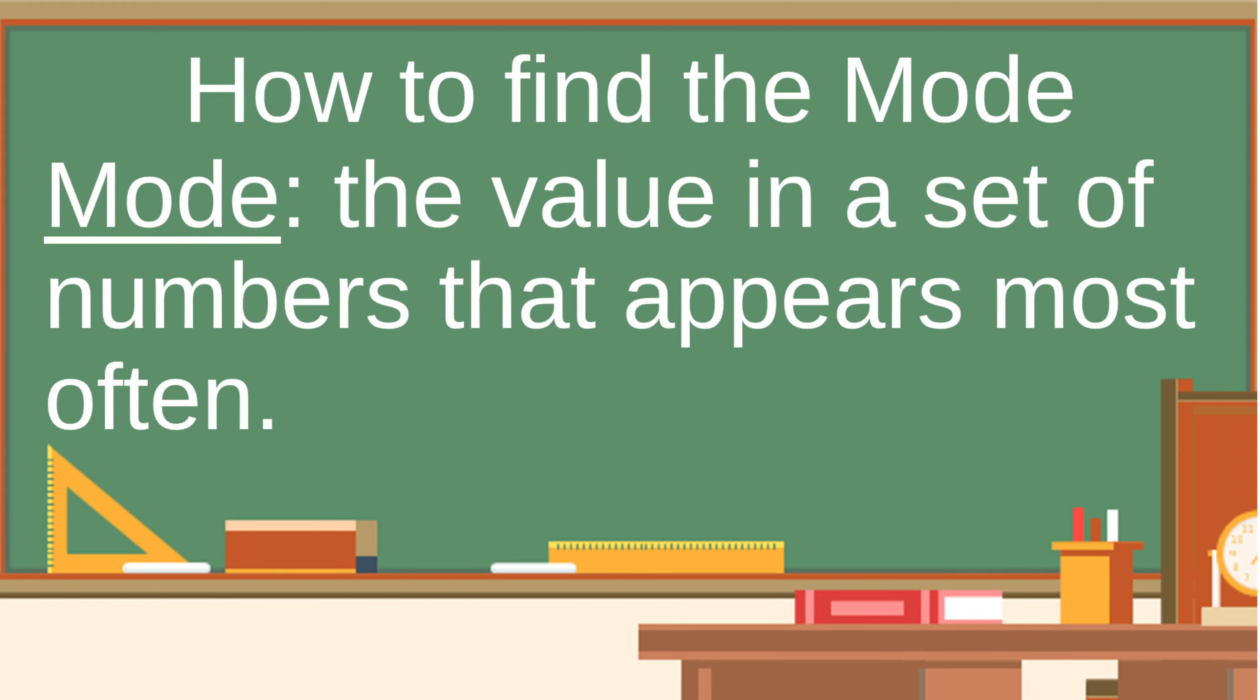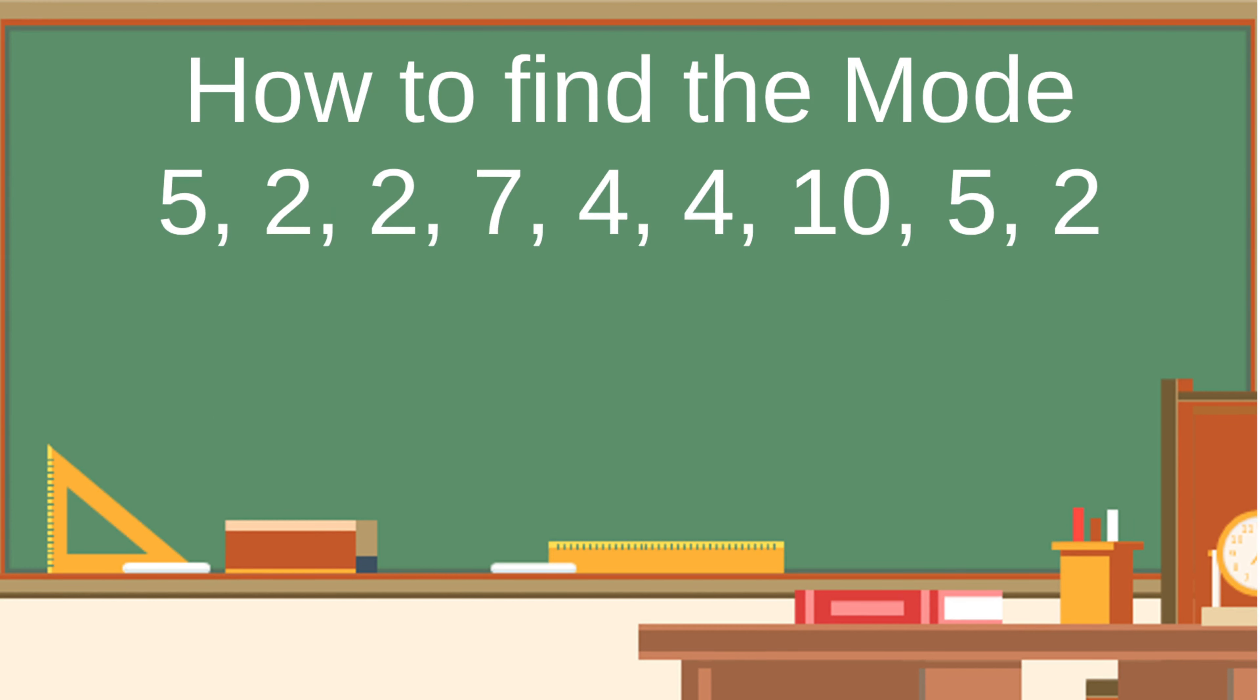Let's say that you have a set of numbers like 5, 2, 2, 7, 4, 4, 10, 5, 2. If you review your set, you can tell that there are certain numbers which repeat. These are multiple fives, twos, and fours.